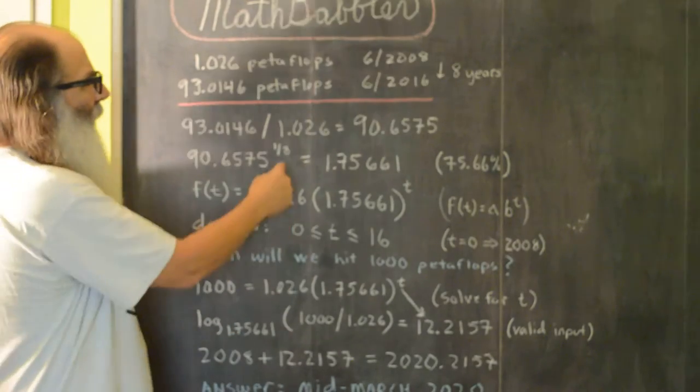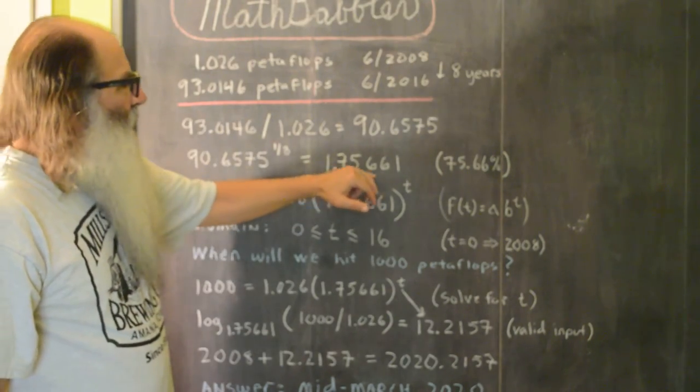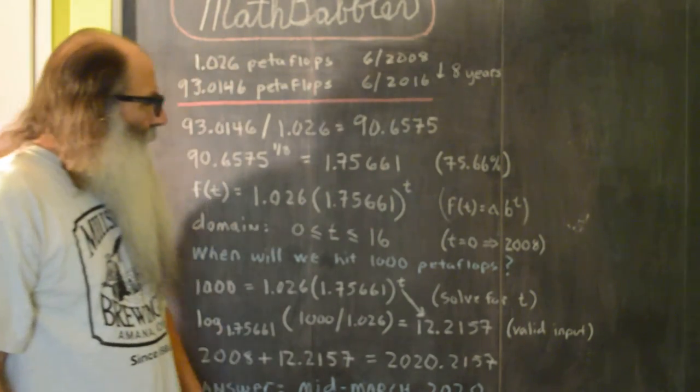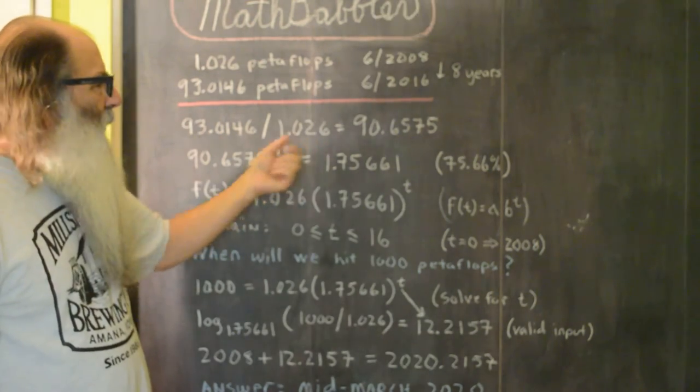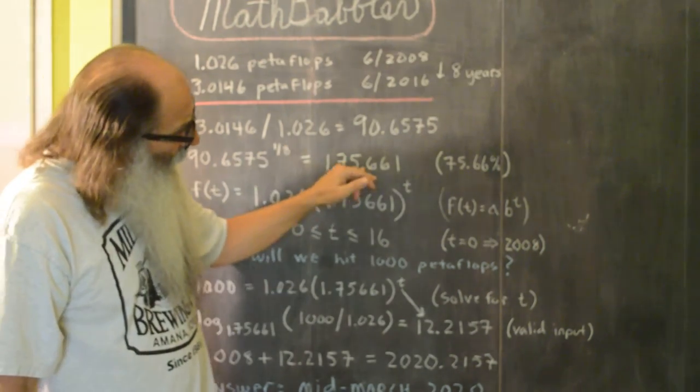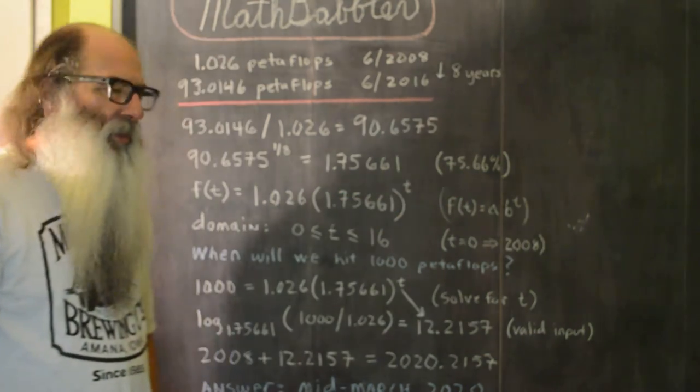If we take the eighth root of 90.6575, we get 1.75661. This is going to be the growth factor for our exponential function. And it works out to be a growth rate of about 76% a year.